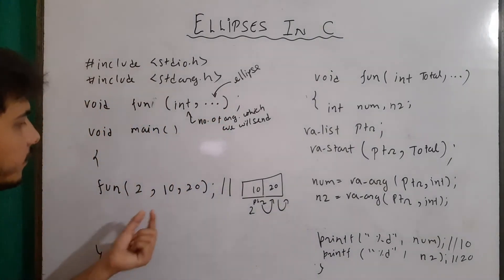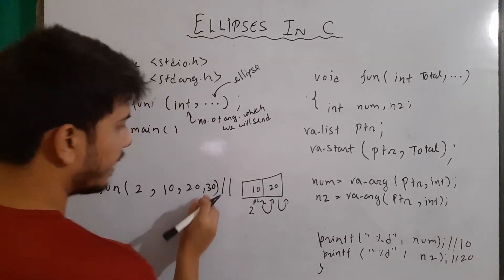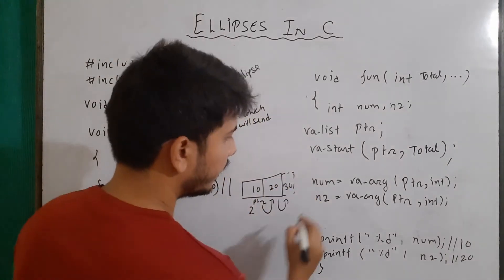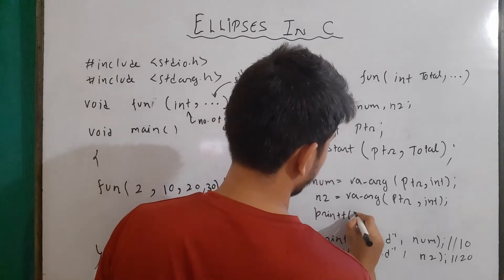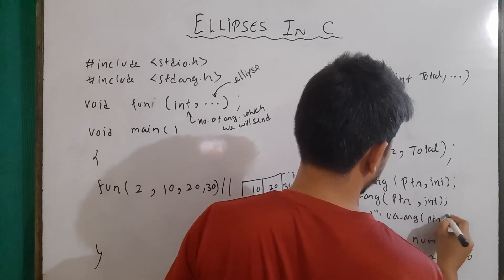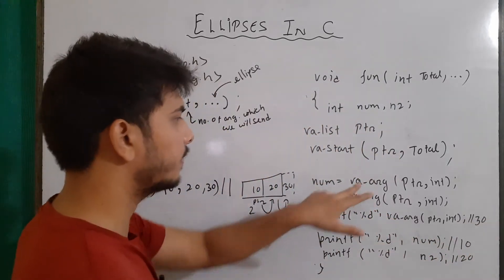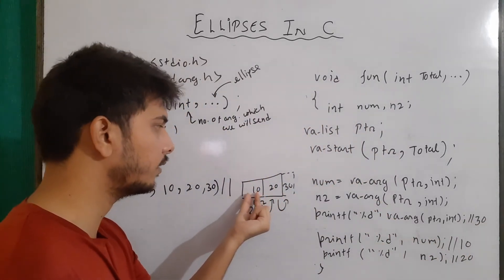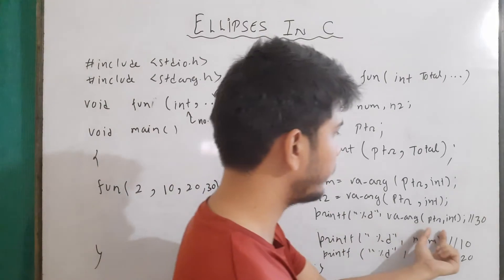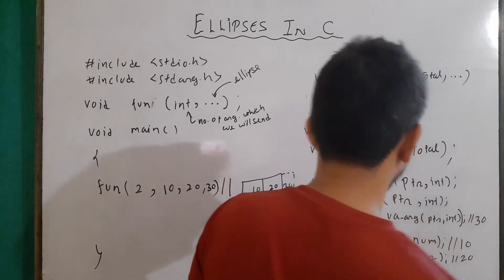Now let's say instead of sending two values I'm sending three values, and the last content is 30. Here the third position will now have 30. So if I directly write printf("%d", va_arg(ptr, int)), it will give me output as 30 — because first va_arg gives the content of the first location, then reaches the second location, then here it reaches the third location. Here I am directly printing the value instead of assigning it to another variable, so it gives output as 30.